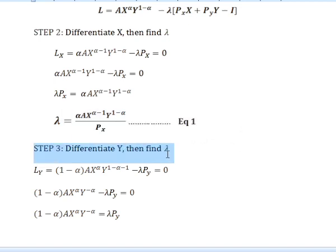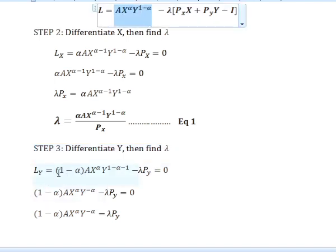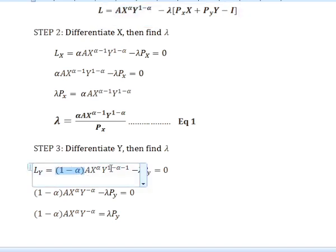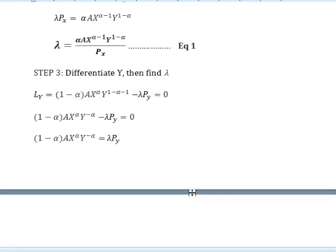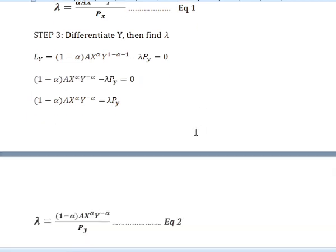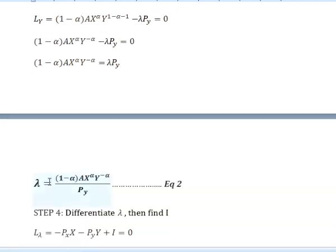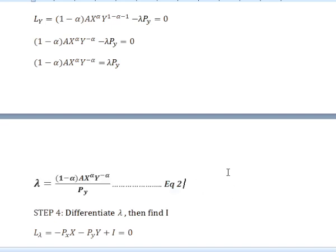For the next step, we need to differentiate y to find lambda. The power of y gives us 1 minus alpha, multiplied with a, applying y to the power of negative alpha, minus lambda times the price of y. We make lambda the subject, solve the equation, and get equation 2.